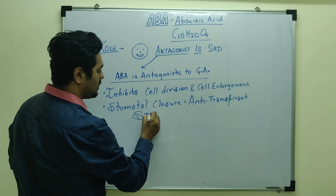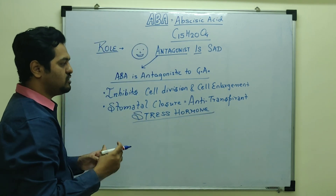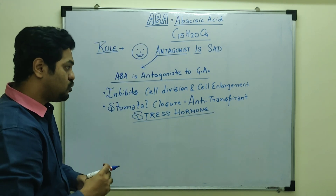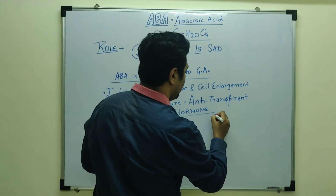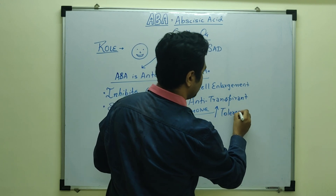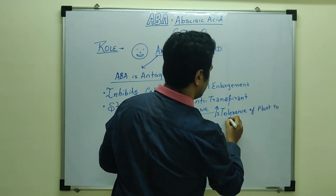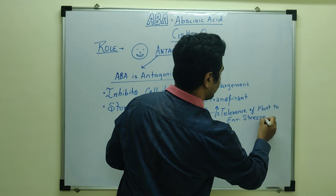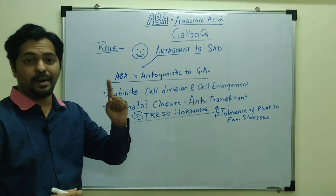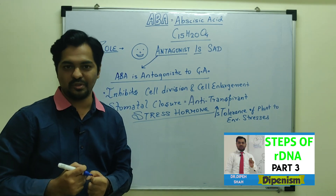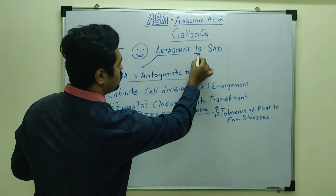Abscisic acid is called a stress hormone because it is released under unfavorable or stressful conditions. By inhibiting cell division and closing stomata, it increases the tolerance of plants to environmental stresses. Its inhibitory impact actually works to protect the plant.